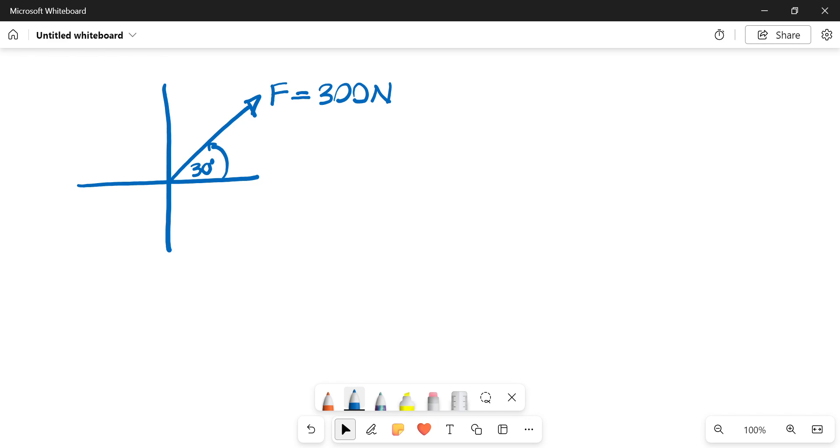So by looking at this diagram, we know that that will be our x-axis, that will be our y-axis. So our F, or our force of F, which has a magnitude of 300 newtons, is acting at an angle of 30 degrees to the horizontal.